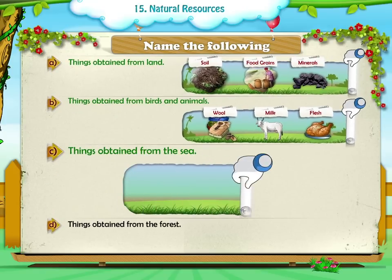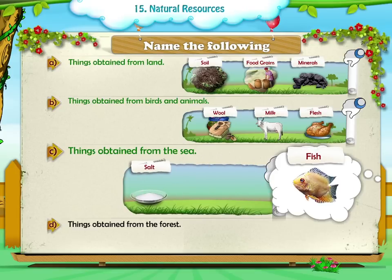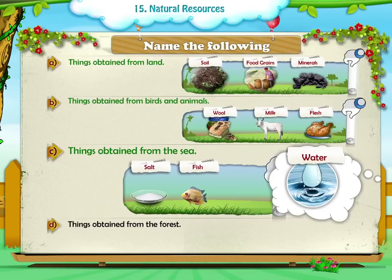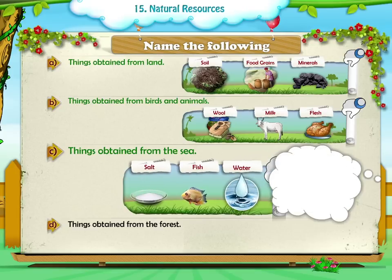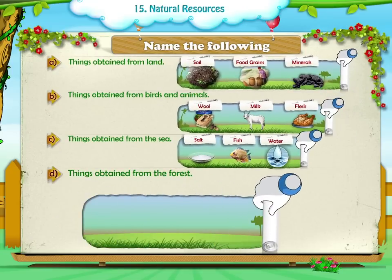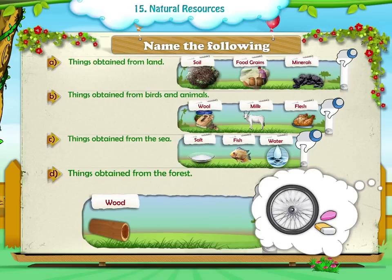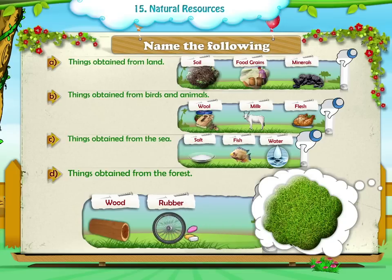C. Things obtained from the sea: Food, Flesh, Water. D. Things obtained from the forest: Wood, Rubber, Grass.